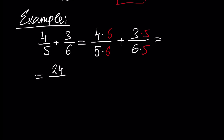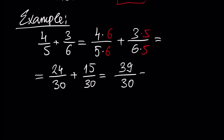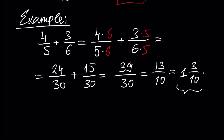We get 24 over 30 plus 15 over 30. Since the denominators are the same, we add the numerators: 24 plus 15 is 39, giving us 39 over 30. We can divide numerator and denominator by 3 to get 13 over 10, which as a mixed number is 1 and 3 over 10, which by definition equals 1 plus 3 over 10.